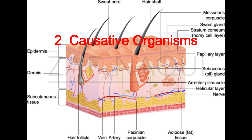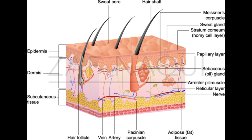Two, causative organisms. Cellulitis is commonly caused by Staphylococcus aureus and Streptococcus pyogenes. Erysipelas is primarily caused by Streptococcus pyogenes, Group A Streptococcus.